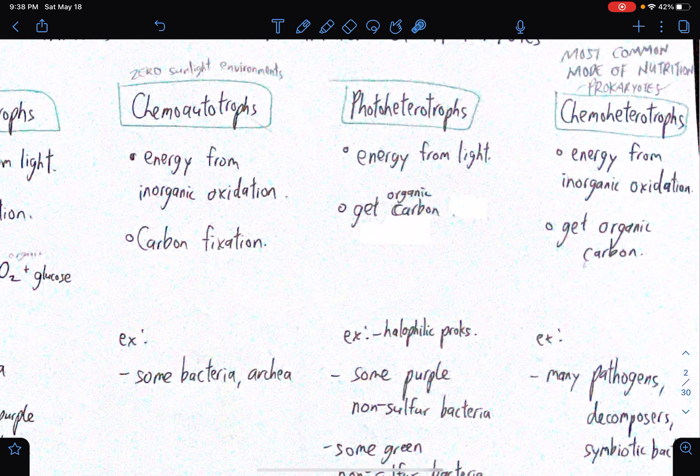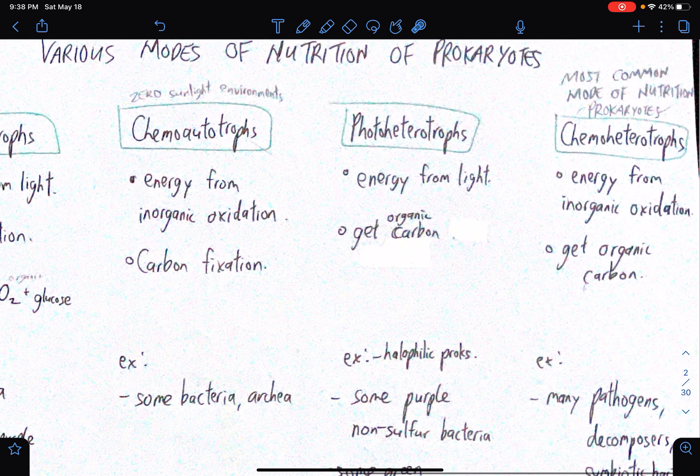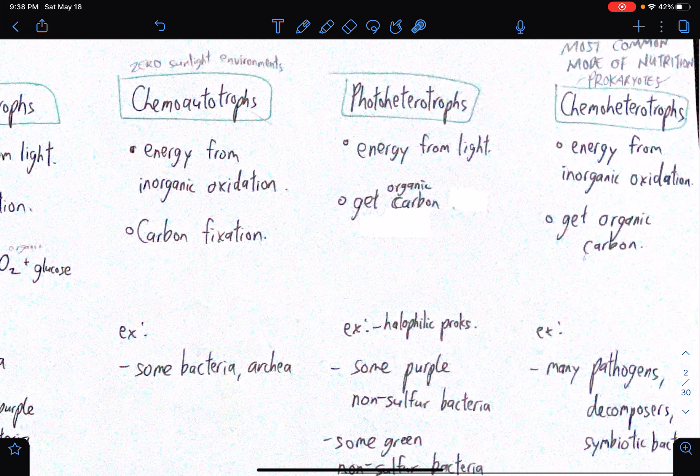Chemo-autotrophs. So they get energy from inorganic oxidation. They undergo carbon fixation. For instance, there are some bacteria and archaea that fall under this category. So chemo-autotrophs live in zero-sunlight environments. That's for sure.